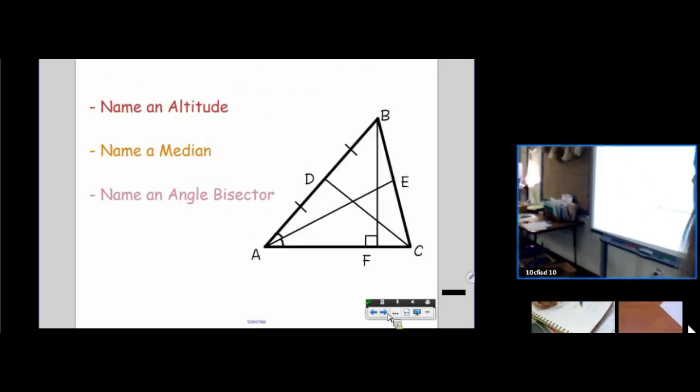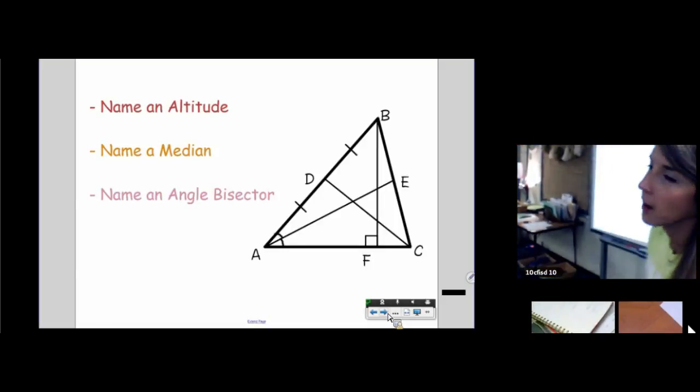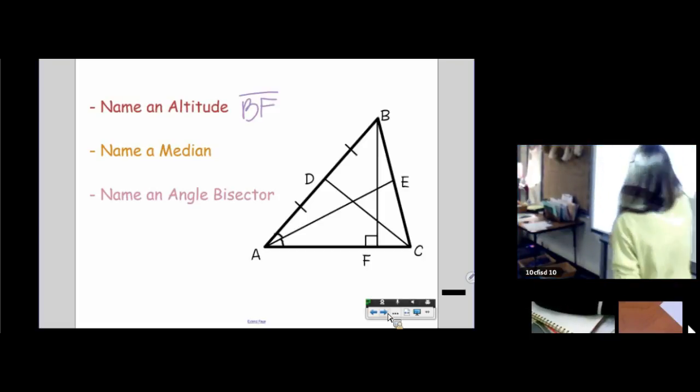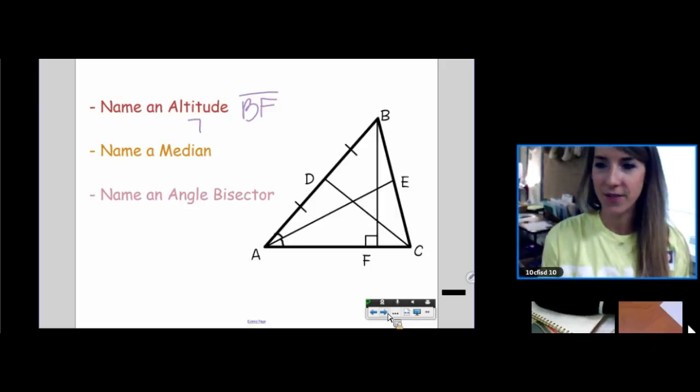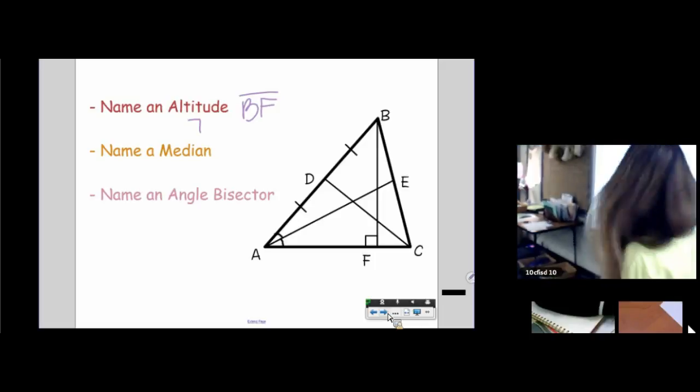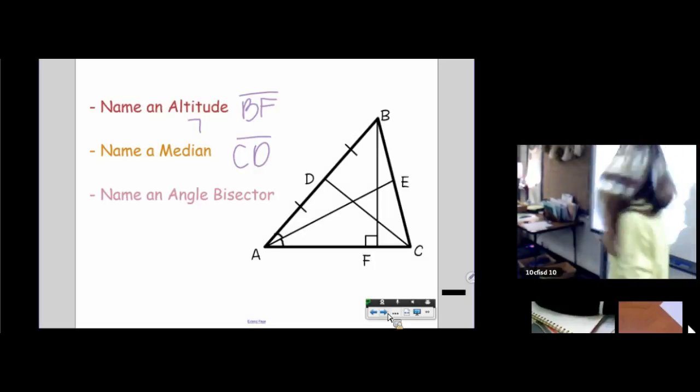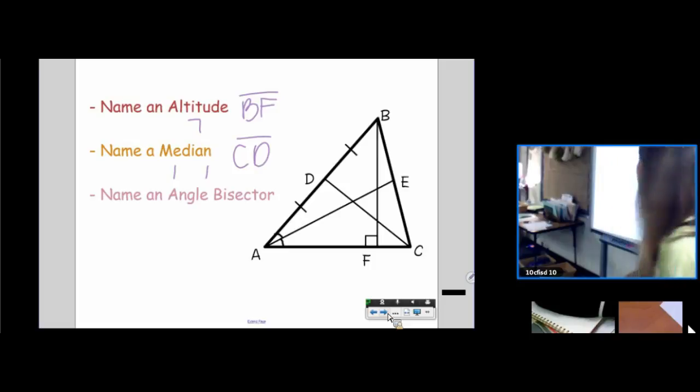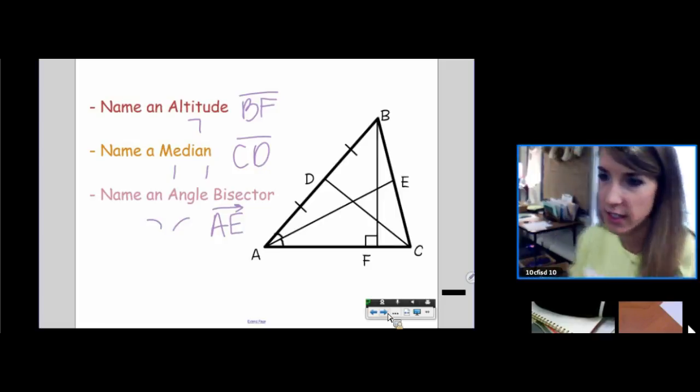Let's practice a few of these. Name an altitude. Very nice. BF. What gave it away? The right angle marking, right? Name a median. BD. Awesome. What gave it away? The tick mark. Name an angle bisector. This is silly, right? AE. Technically, it's a ray. And what gave it away? The arcs.